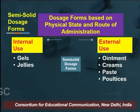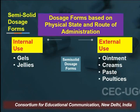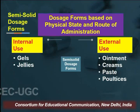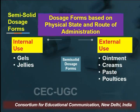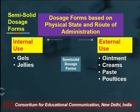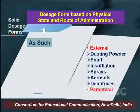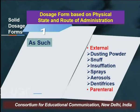For semi-solid dosage forms under the integrated classification of physical state and route of administration, they are subclassified into internal and external use. Examples under internal use include gels and jellies, whereas for external use it includes ointments, creams, paste, and poultices.